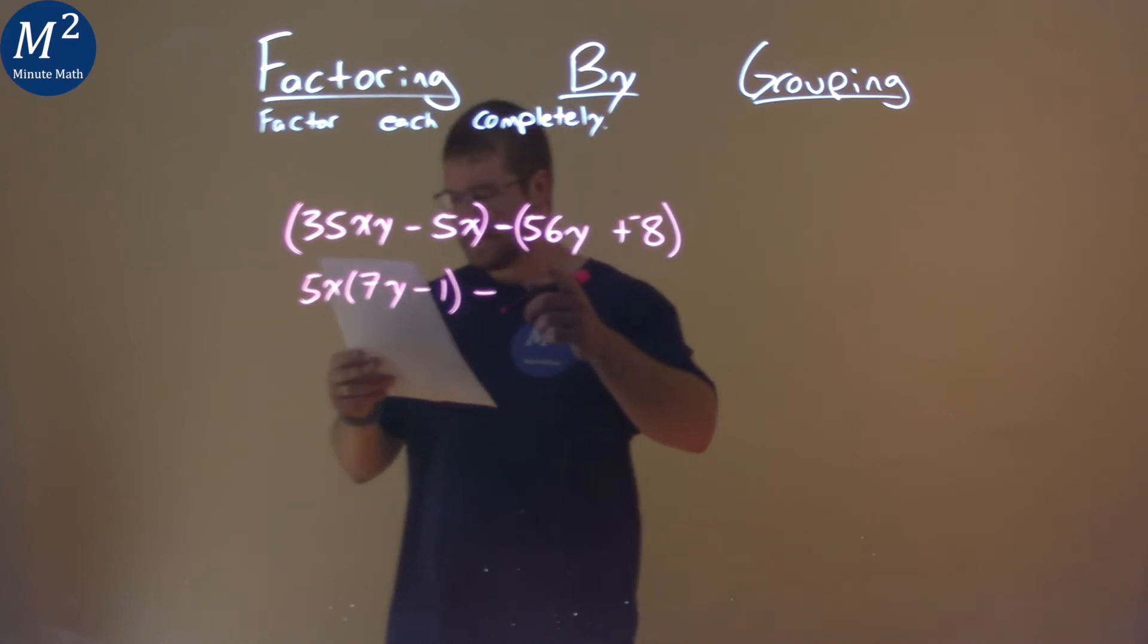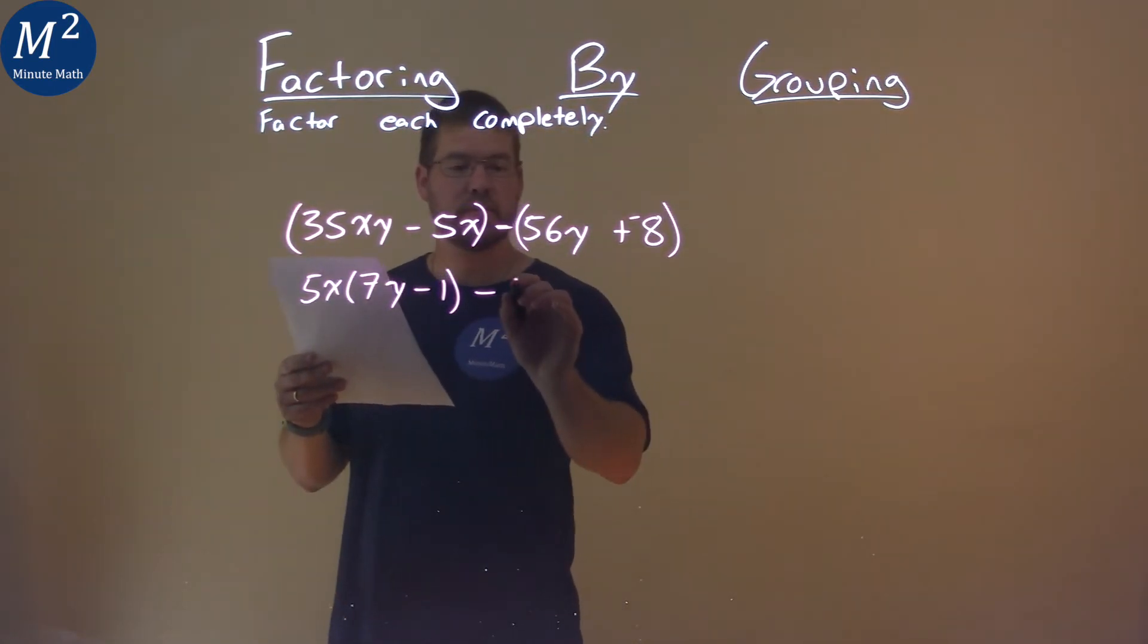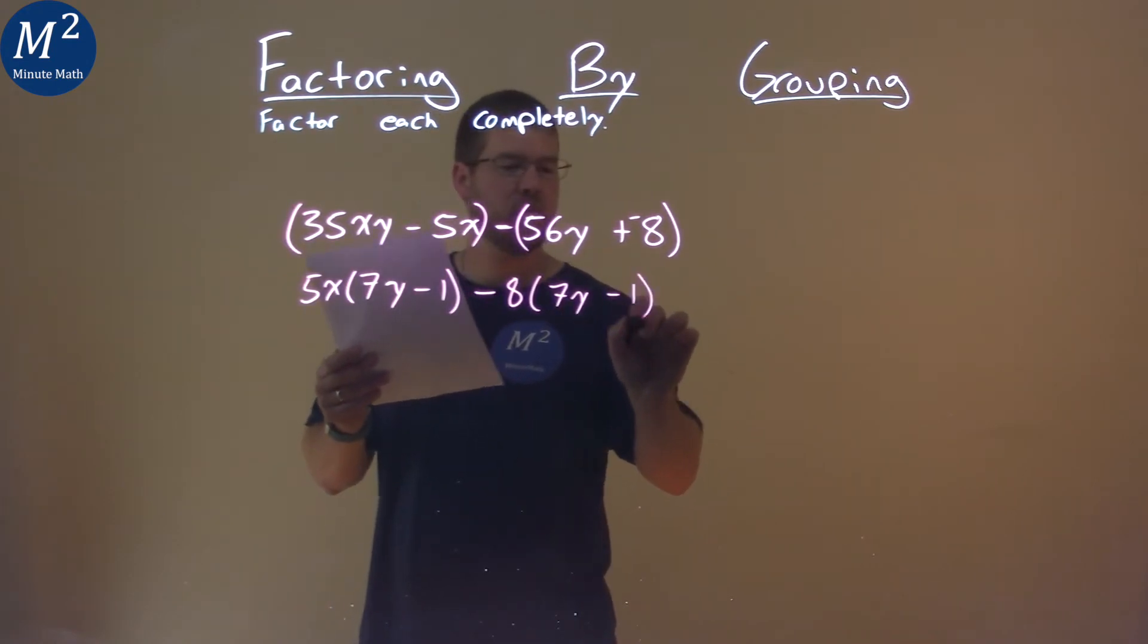Subtraction going on, and if I pull out, I can see there's an 8 in both parts. So if I pull out an 8, I'm left with a 7y here, minus 1.